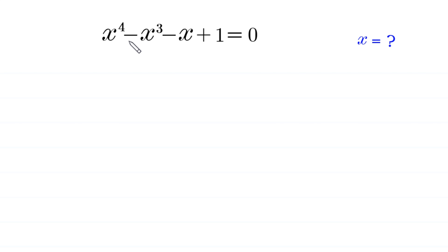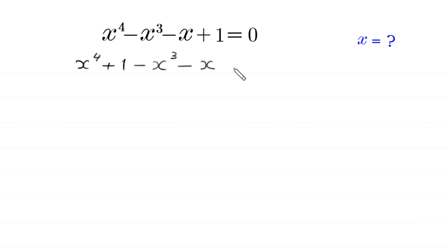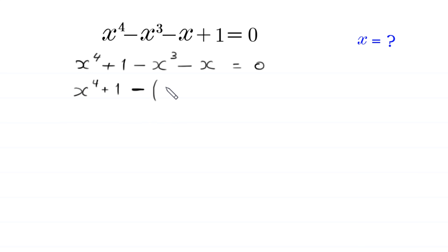First, we rearrange this expression on the left-hand side. We write x to the power 4 first, then plus 1, then negative x cubed, and finally negative x, all equal to 0. Next, from the terms negative x cubed and negative x, we factor out the negative sign as a common factor, leaving positive x cubed plus x in brackets.